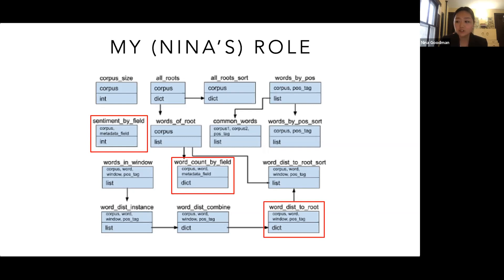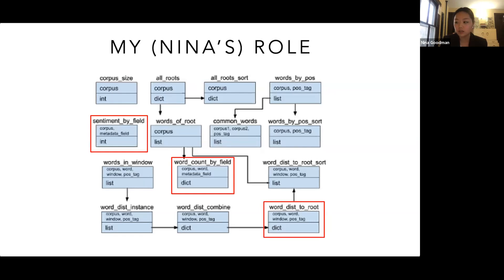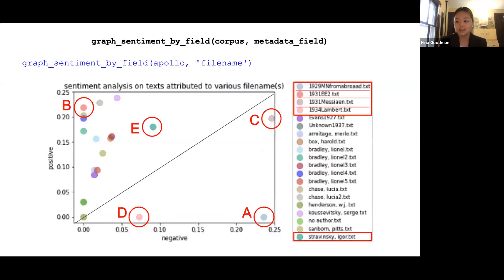Shown here as a brief dependency chart, each function I wrote can parse, count, sort, compare, and analyze words and text. Today I will use a corpus containing documents written about Stravinsky's Apollo to showcase some of the higher-level functions, as indicated in red. The outputs from these functions are usually used in visualization, of which today I will showcase the sentiment graph.